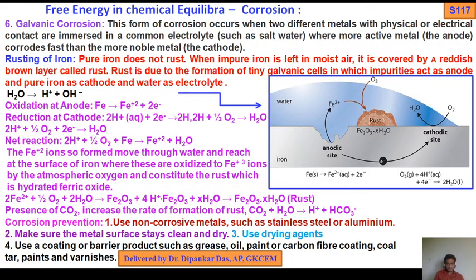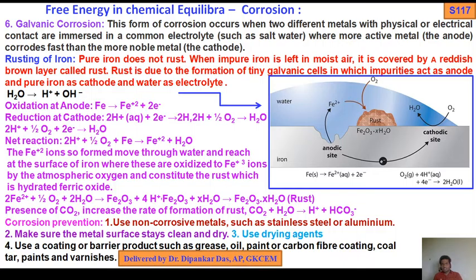Galvanic corrosion: this form of corrosion occurs when two different metals with physical or electrical contact are immersed in a common electrolyte such as salt water, where the more active metal — i.e., the anode — corrodes faster than the more noble metal, i.e., the cathode. That is galvanic corrosion.